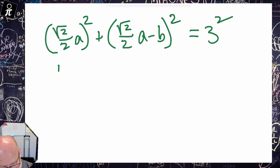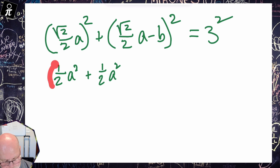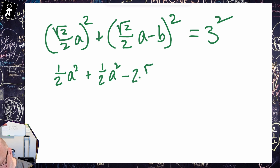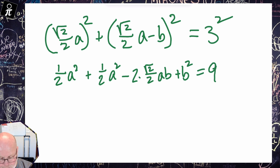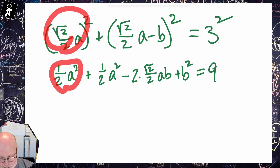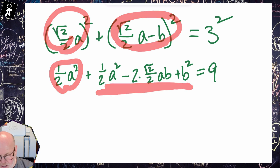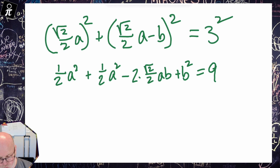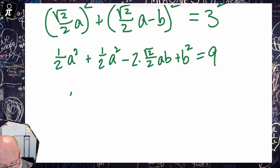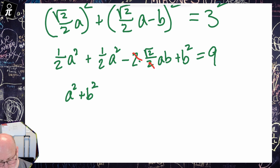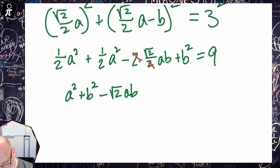Now let's clean that up — it's similar to what we already did. This gives us ½A² plus another ½A² minus two copies of (√2/2)·AB plus B² equals 9. Combining the ½A² terms gives A squared, the 2s cancel leaving −√2·AB, and we get A² + B² − √2·AB = 9.